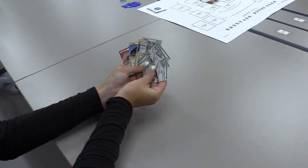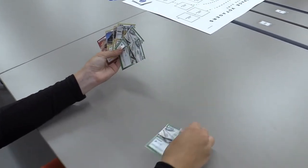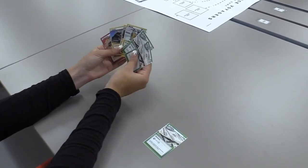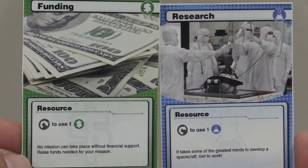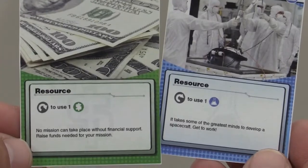Put down a resources card to go toward the purchase of a spacecraft or instrument. Remember that each player can only play one resources card from their hand each turn.